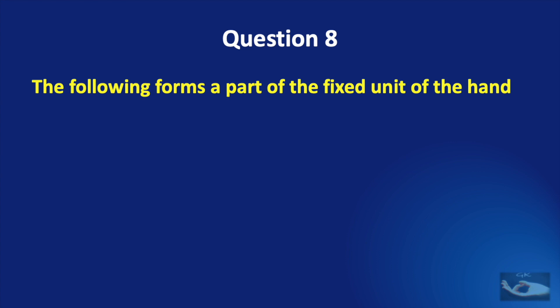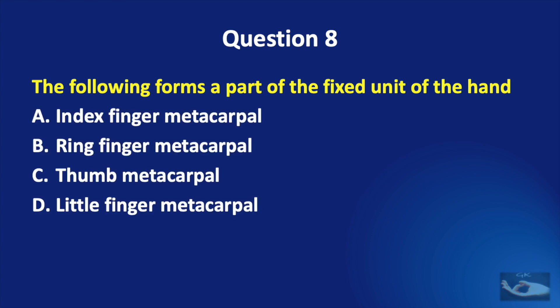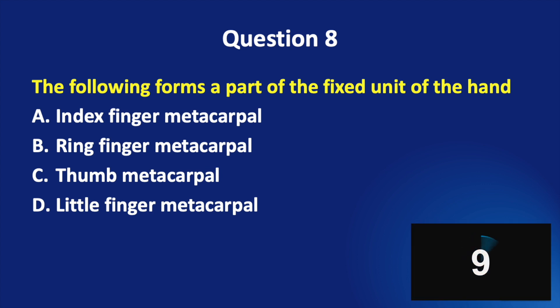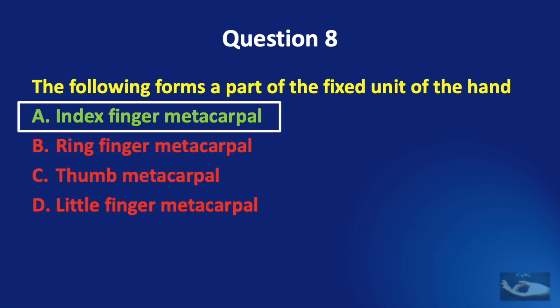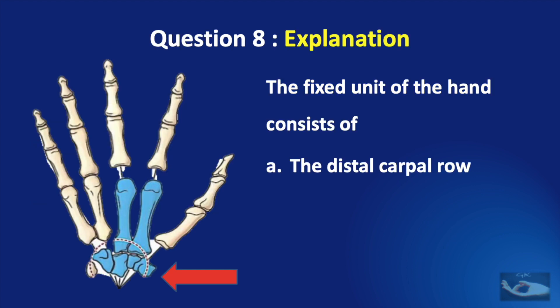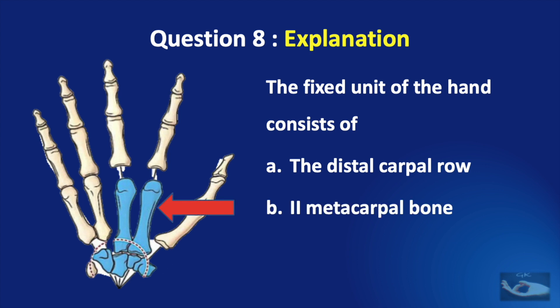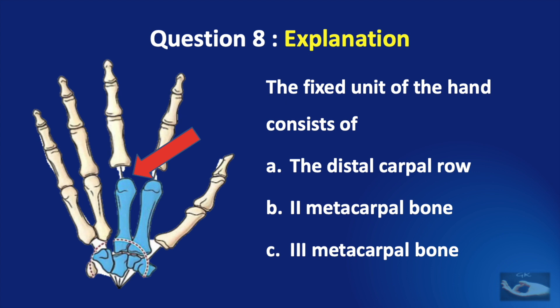Question No. 8. The following forms a part of the fixed unit of the hand: index finger metacarpal, ring finger metacarpal, thumb metacarpal, or little finger metacarpal? The answer is the index finger metacarpal — the second metacarpal. The fixed unit of the hand consists of the distal carpal row, the second metacarpal bone, and the third metacarpal bone.